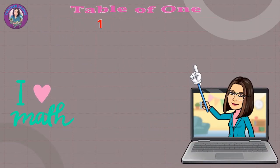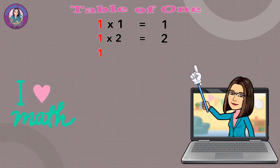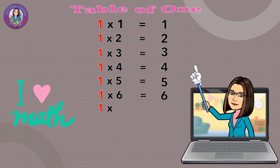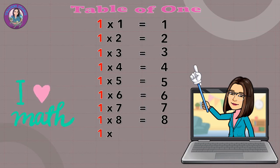Table of 1. 1 x 1 equals 1. 1 x 2 equals 2. 1 x 3 equals 3. 1 x 4 equals 4. 1 x 5 equals 5. 1 x 6 equals 6. 1 x 7 equals 7. 1 x 8 equals 8. 1 x 9 equals 9. 1 x 10 equals 10.